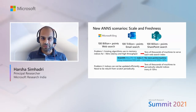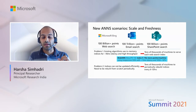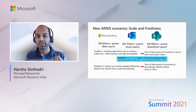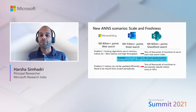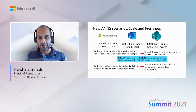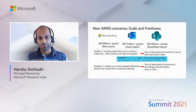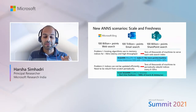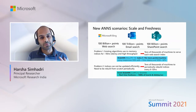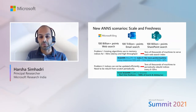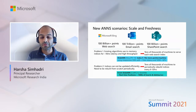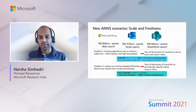We address the first problem with the DISKANN system. This is the first published system that uses inexpensive SSDs to index 5 to 10 times more points per machine, thus offering a lower cost of operation while at the same time offering sub-10-millisecond latencies and high throughputs. We solve the second problem, which is a streaming problem, using the FreshDISKANN system, which builds on DISKANN to provide real-time freshness properties and at the same time allows for thousands of inserts and deletes to take place on the same node which supports the search.